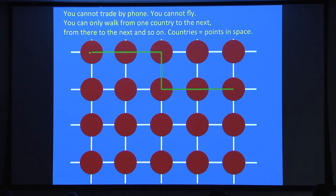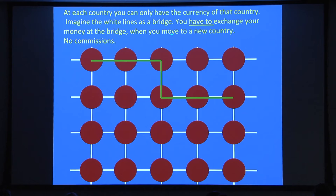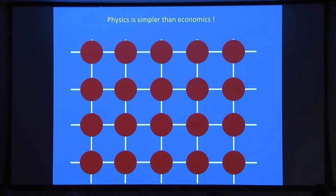You cannot trade by phone, you cannot fly — you can only walk from one country to the next. Countries are like points in space. If you have some amount of money in dollars, you have to go to the next country, change all your dollars for euros, and when you move to the next country — say Russia — change all your currency to rubles, and so on. You can move along closed circuits and earn money. At each country you can only have the currency of that country; you have to exchange all your money at the bridge. If you come here and exchange and then come back, you get your original money back — there are no commissions.